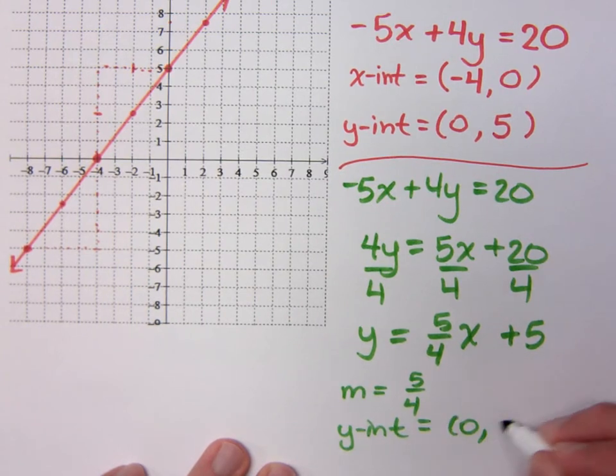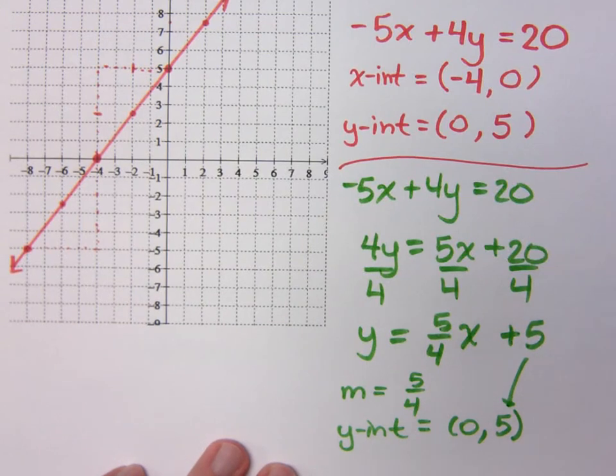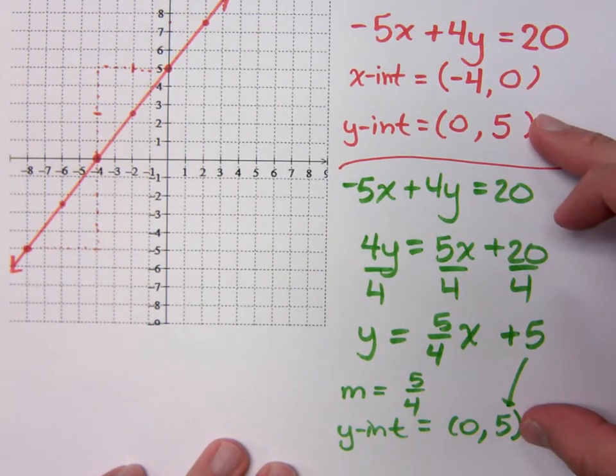5/4 x. And what's the y-intercept? Positive 5. 0, 5. Okay. That's the same thing I already have for my y-intercept.